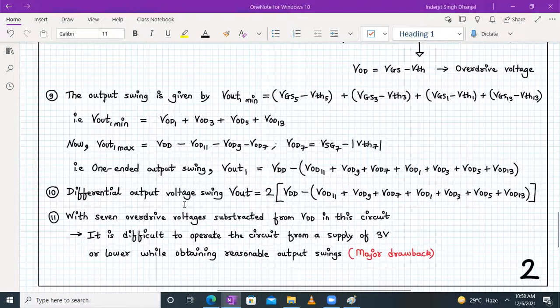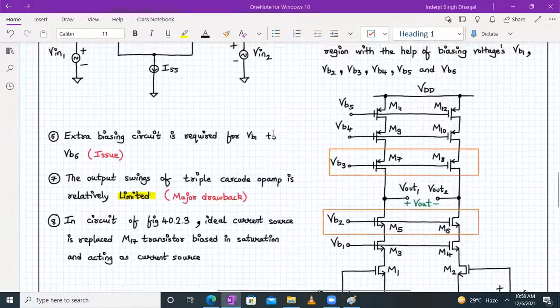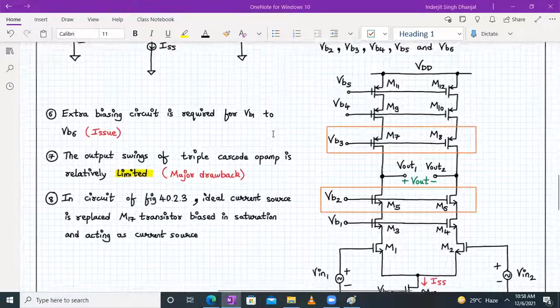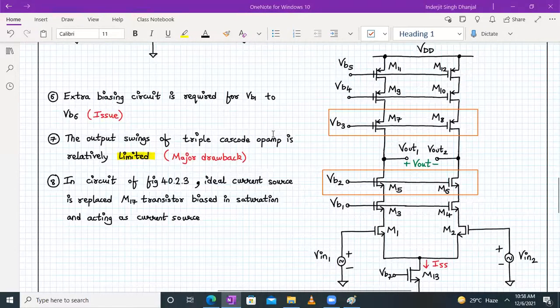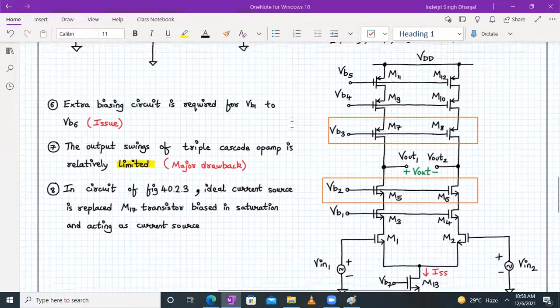This is Vout1 max. Your single-ended output swing Vout1 will be equal to VDD minus seven overdrive voltages. The differential output voltage swing will be twice that single-ended output swing, so Vout will equal twice of VDD minus seven overdrive voltages. With seven overdrive voltages subtracted from VDD, it is difficult to operate the circuit from a supply of three volts or lower while obtaining reasonable output swing. That's the major drawback of this triple cascode op-amp.